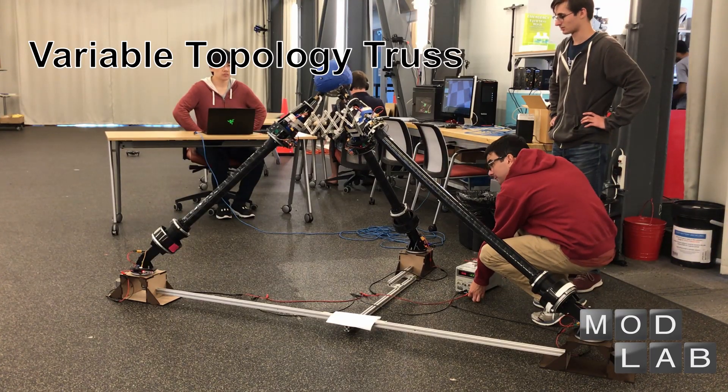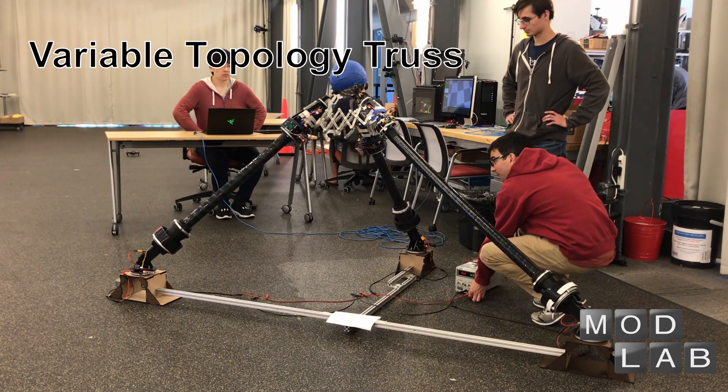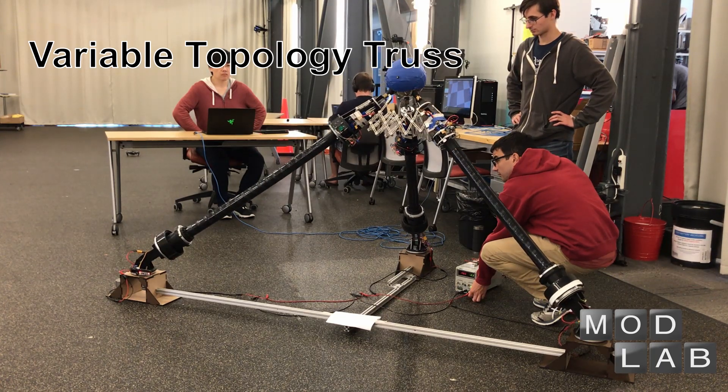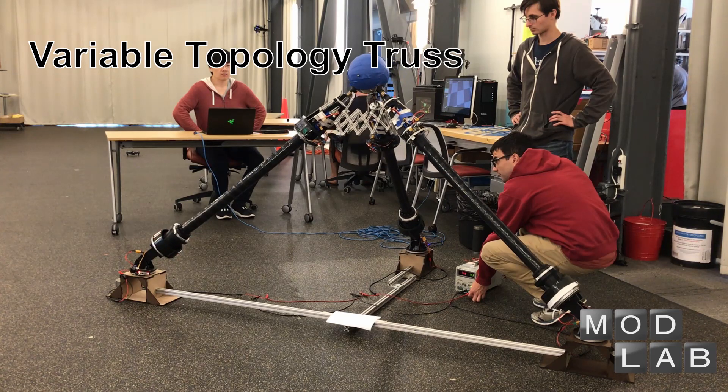Variable Topology Truss, or VTT, is a modular robot in truss structure. Each module is a prismatic joint made by spiral zipper actuator, and modules are connected by nodes.